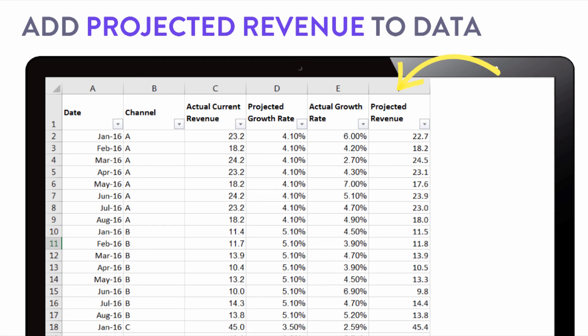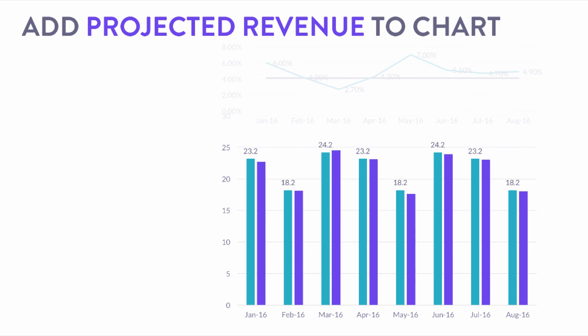Now that I have projected revenue as a whole number, I've added it to the chart as a second bar. It's not terribly useful in this format — I'm not a huge fan of clustered bar charts, it's hard to get the nuance. In this particular example, the variance of projections is pretty small, so it's a little tougher to see.